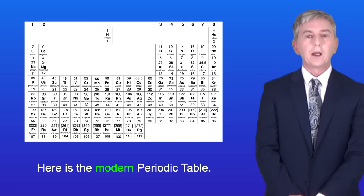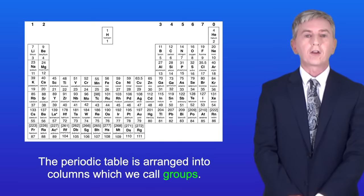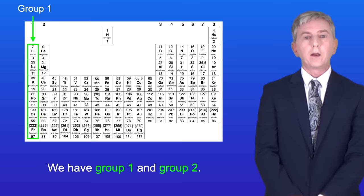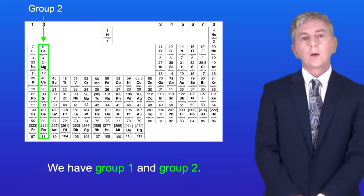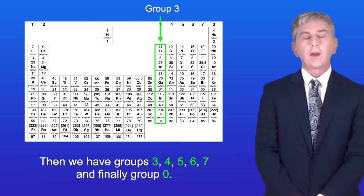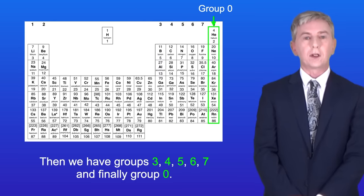Here's a modern periodic table, and you are given a copy of this in your exam. The periodic tables are arranged into columns, which we call groups. So we've got group 1 and group 2. We then have this big block, which we call the transition elements. And then we have groups 3, 4, 5, 6, 7, and finally group 0.